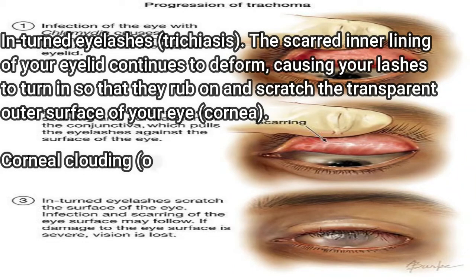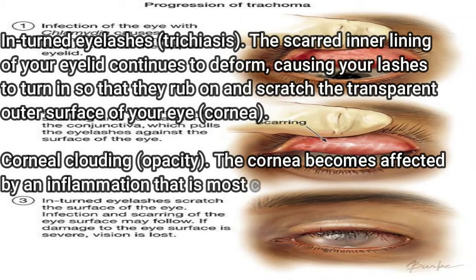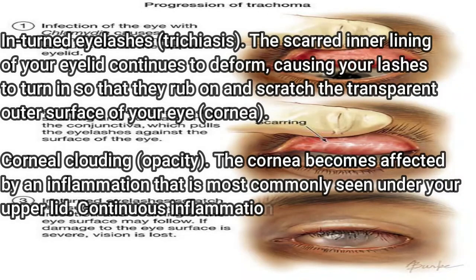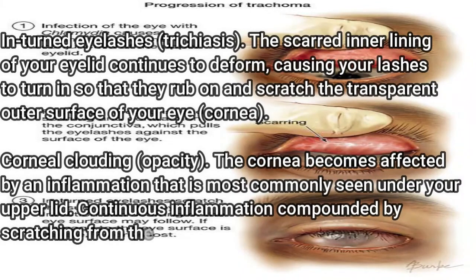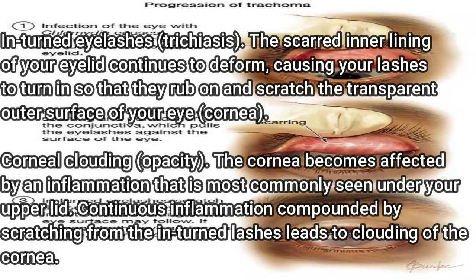Stage four — trichiasis: the scarred inner lining of the eyelid continues to deform, causing lashes to turn in so that they rub and scratch the transparent outer surface of the eye, the cornea. Stage five — corneal clouding (opacity): the cornea becomes affected by inflammation most commonly seen under the upper lid, compounded by scratching from the inturned lashes.